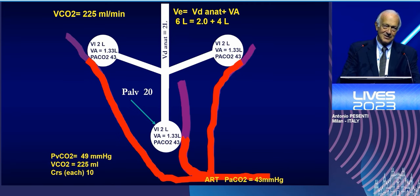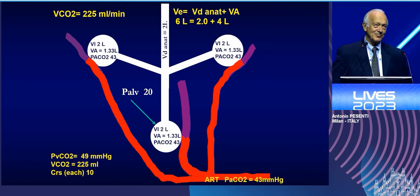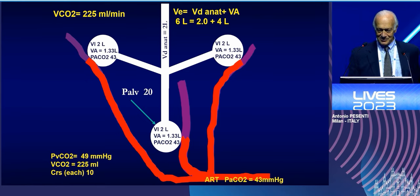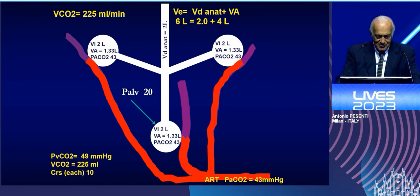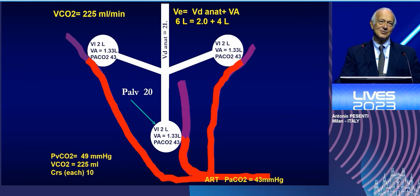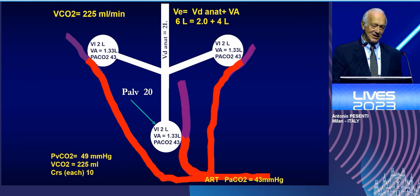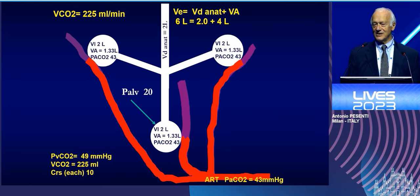In a normal subject with a normal respiratory rate, the anatomical dead space amounts to approximately 2 liters per minute. Each one of the regions receives 2 liters per minute. The pCO2 is 43, the lung is perfect, and the arterial pCO2 is 43.